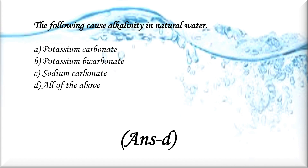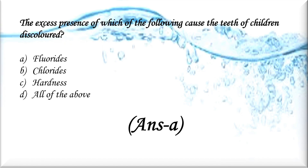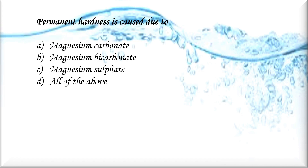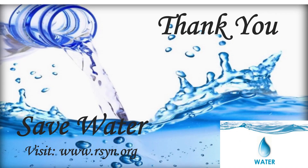The alkalinity in natural water is caused by potassium carbonate, potassium bicarbonate, and sodium carbonate. The next question: the excess presence of which of the following causes the teeth of children to become discolored? The answer is A, fluoride. Excess presence of fluoride is the main reason for discoloring of teeth in children. The next question: permanent hardness is caused due to (A) magnesium carbonate, (B) magnesium bicarbonate, (C) magnesium sulfate, or (D) all of the above. The answer is C, magnesium sulfate. Thank you — save water.